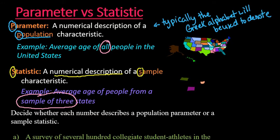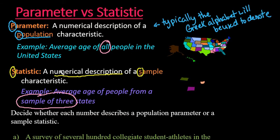Anytime you are describing an entire population, it's hard to do. Looking at all of the people in the United States and finding their average age would be very difficult. It would even be difficult to find the average age of people from just three states, because then you have to know all the people in those three states. So a more realistic example of a sample statistic might be selecting a thousand adults that live in the United States and finding the average age of those 1,000 people.